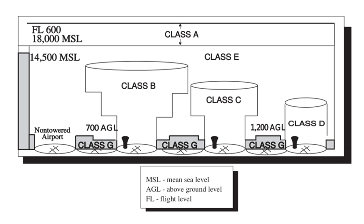Each national authority designates areas of special use airspace, primarily for reasons of national security. This is not a separate classification from the ATC-based classes; each piece of SUA is contained in one or more zones of letter-classed airspace. SUAs range in restrictiveness, from areas where flight is always prohibited except to authorized aircraft, to areas that are not charted but are used by military for potentially hazardous operations — in which case the onus is on the military personnel to avoid conflict.